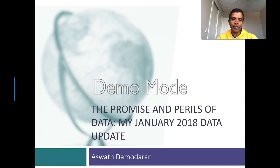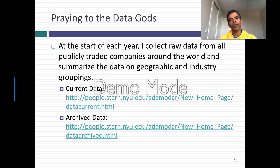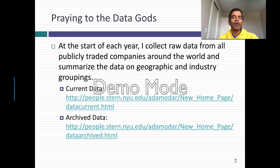I summarize it based on geographies, based on industries, and the data is on my website. You can find it if you go to the data part of my website. You will find the current year's data set — the January 2018 data set — at the first link. And if you want data from previous years, you will find whatever data I have in the archive data sets. I don't hold back on any of the data. Almost everything I collect, I share.